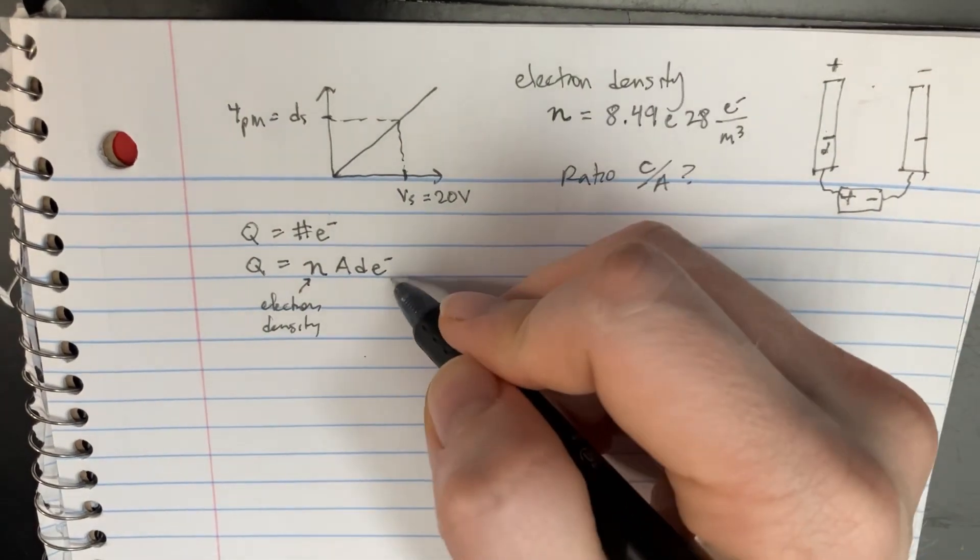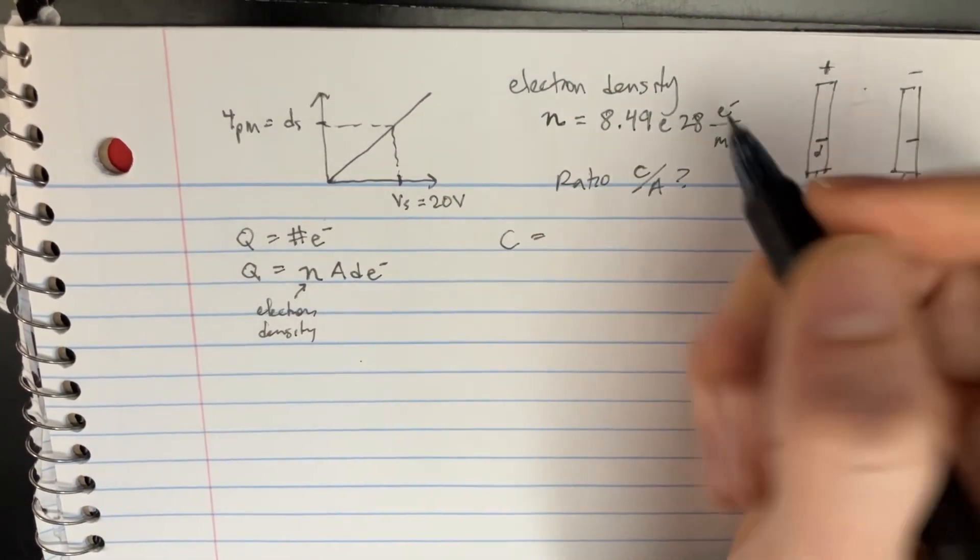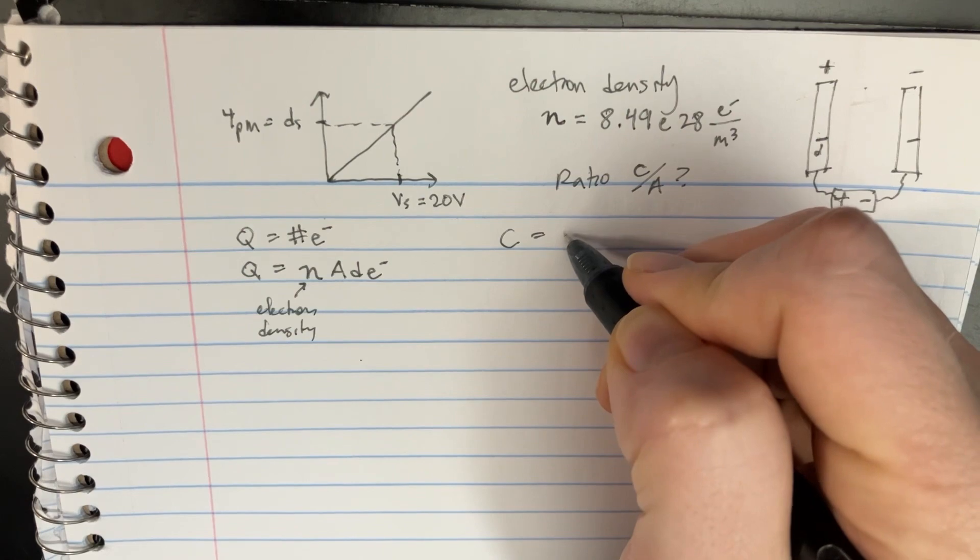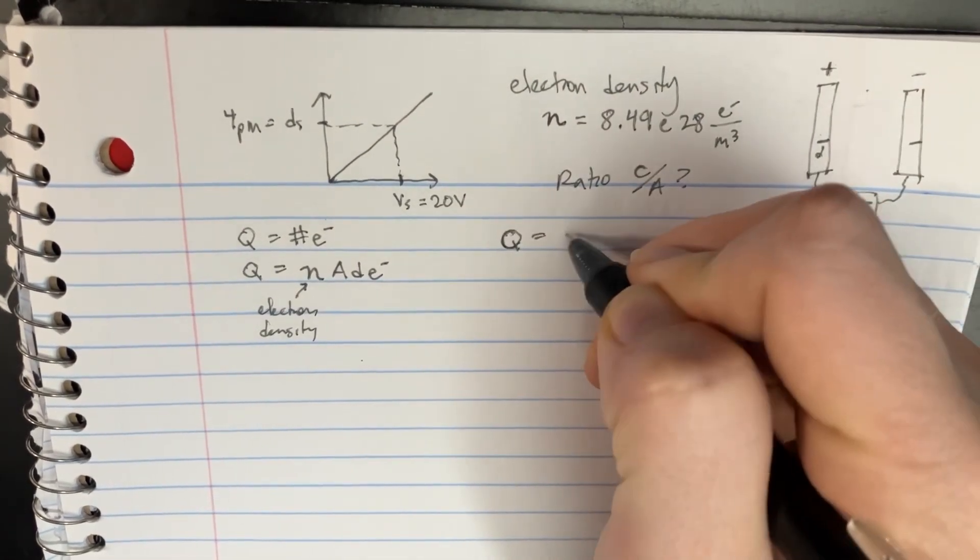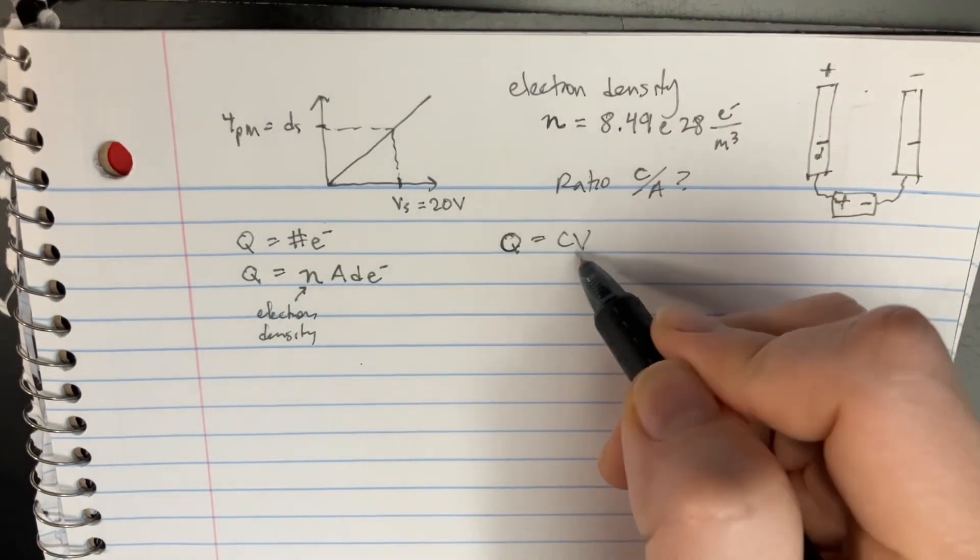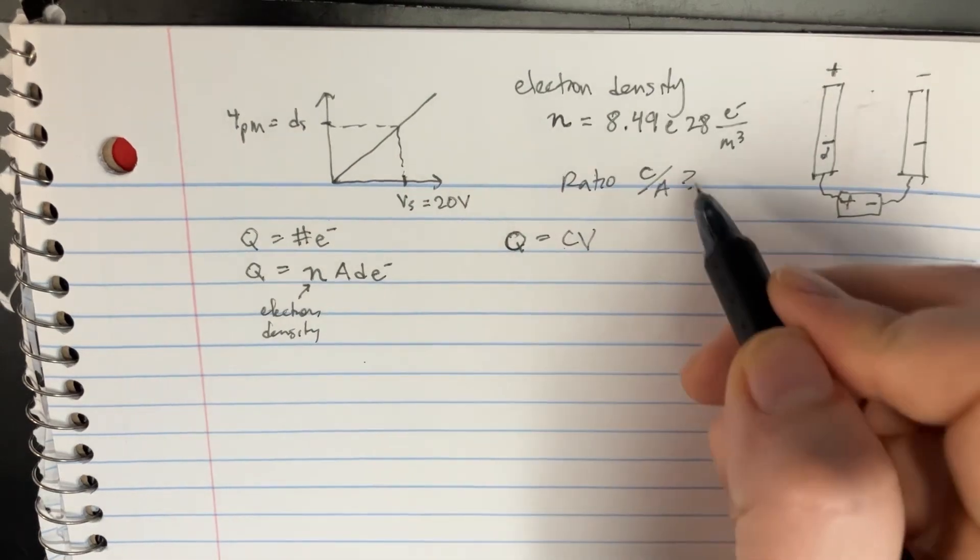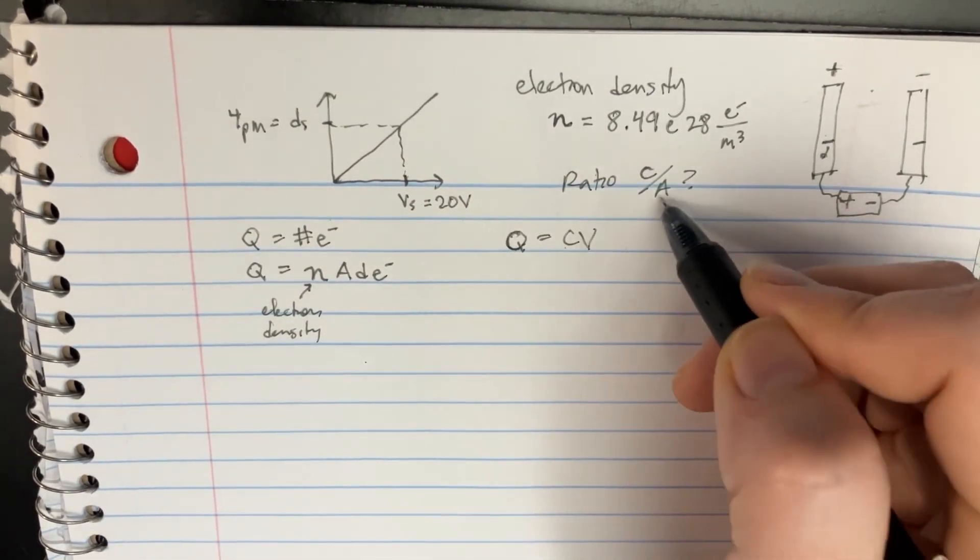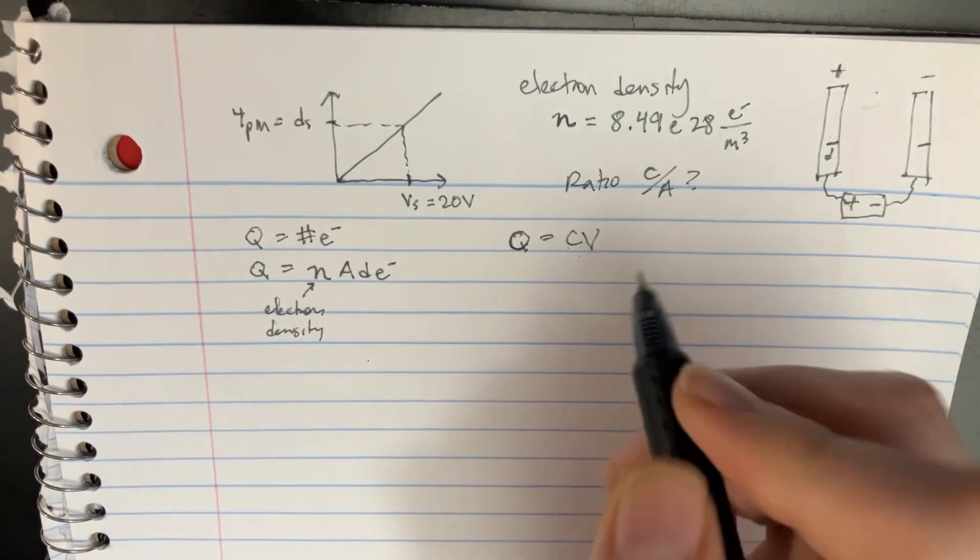We also know that Q is equal to C V. That's the voltage, that's the capacitance, and that's the charge. And they're asking for the ratio C over A, so what we can do is set this equal to that.